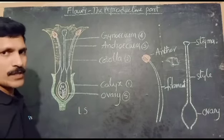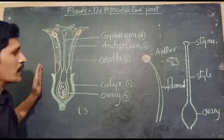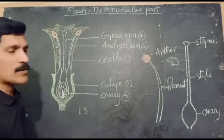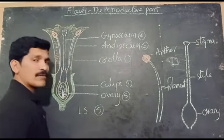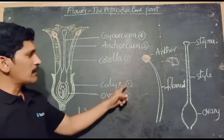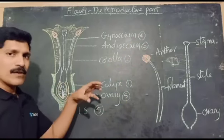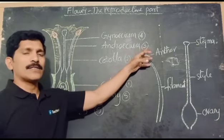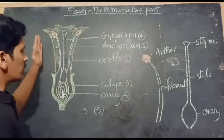Longitudinal section of Datura — Datura stammodium. When you observe the flower, all the parts of the flower are arranged in five circles, and we generally call these whorls. We are giving numbering for how the parts are arranged — which parts are arranging in the first circle, which in the second, third, fourth, and fifth.